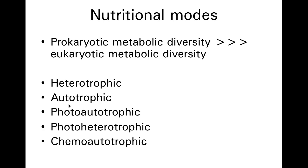Autotrophic organisms feed themselves. Auto, like an automobile, drives itself — something automatic happens by itself. Autotrophic means self-feeding, and those are typically organisms that are photosynthetic. Photoautotrophic organisms photosynthesize in the way you're probably used to hearing about photosynthesis — they harvest light energy, convert it into ATP and reducing power, and then use that reducing power to fix carbon from the atmosphere in the form of carbon dioxide.